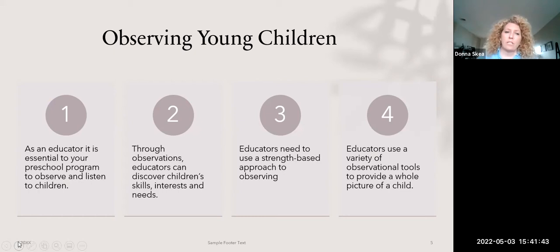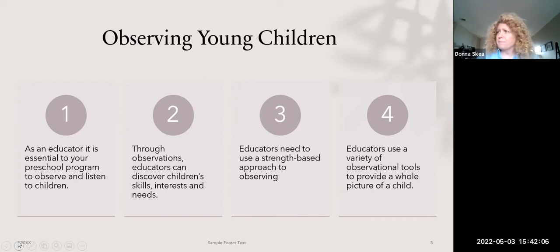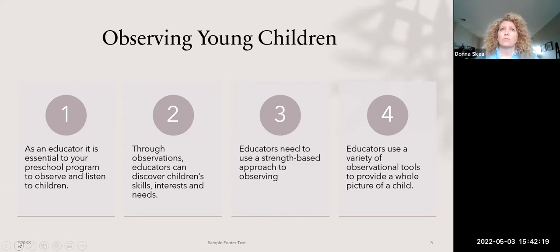Observations are key to helping educators identify what a child knows. When observing young children, the first thing we have to do is listen and observe. Through observations, educators will discover children's skills, interests, and what they need from us — what language to use with a child, what skill they may still be working on, what activities or materials or learning environment adjustments could help them move forward.